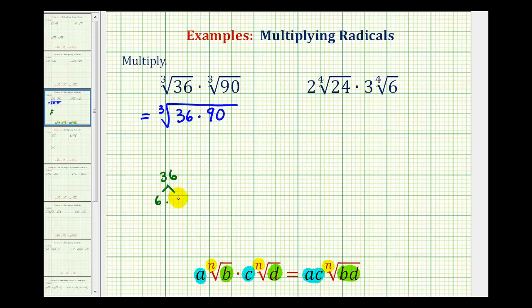So we'll start with the prime factorization of 36, and we'll start with 6 times 6, and 6 is equal to 2 times 3. And for the prime factorization of 90, we could start with 9 times 10. 9 is equal to 3 times 3, and 10 is equal to 2 times 5.